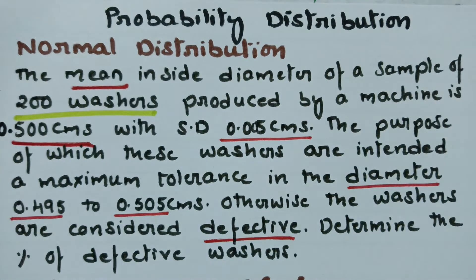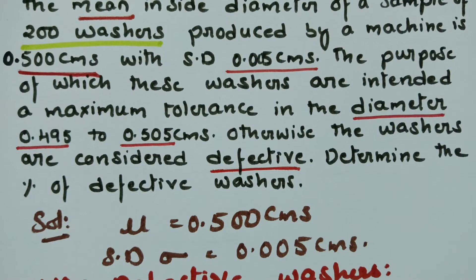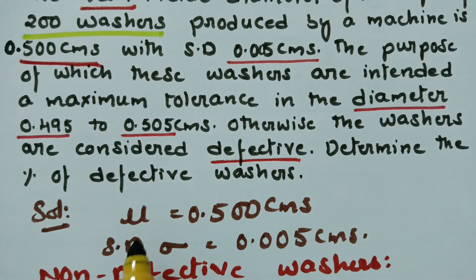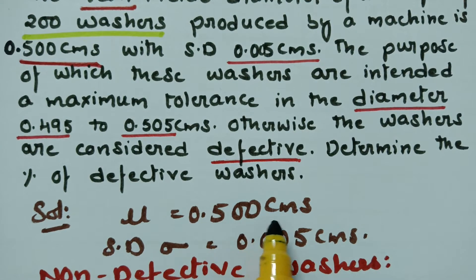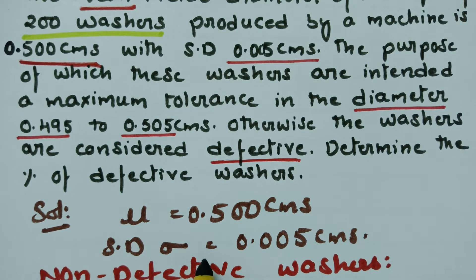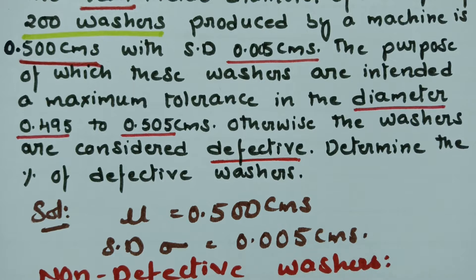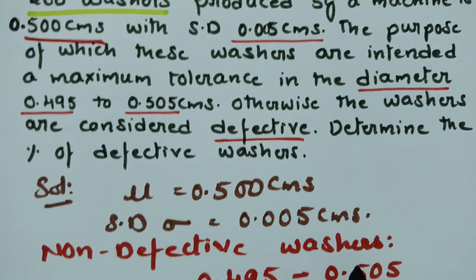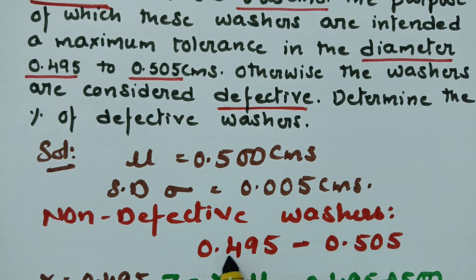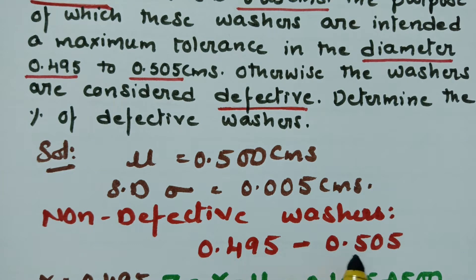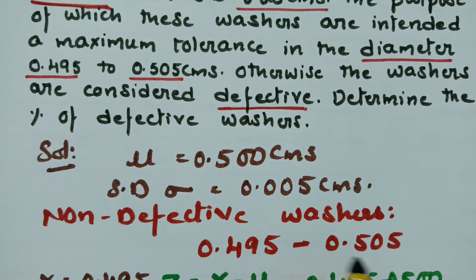Let's get started. In the solution, mean mu is equal to 0.500 centimeters and the standard deviation sigma is equal to 0.005 centimeters. For non-defective washers, the diameter should be within the maximum tolerance between 0.495 to 0.505.